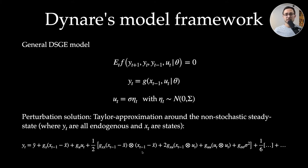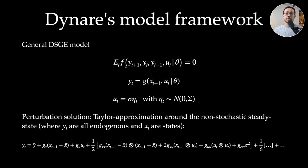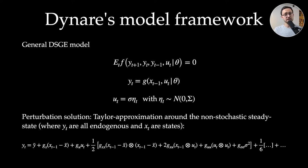The coefficient matrices — gx, gxu, gu, and so on — are obtained by computing Taylor approximations of the model equations, evaluating these at the non-stochastic steady state, manipulating the equations, and inferring those coefficient matrices. This is done automatically by Dynare for any order of approximation, though typically we focus on orders one, two, and three.